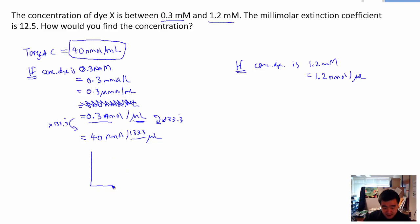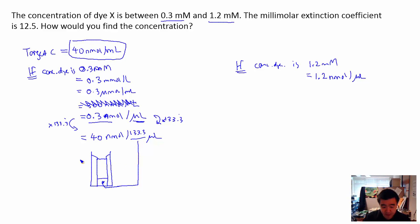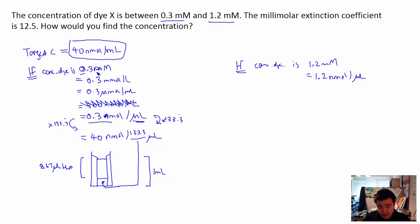So in a cuvette we put in 133 microliters of the unknown dye and top up the rest with water — that's 867 microliters of water — to make a total of 1 milliliter. If the dye is at that low concentration, this gives us 40 nanomoles inside the cuvette, and that concentration should produce an absorbance of 0.5.